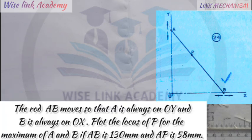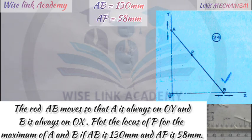As you can see the question in front of you, the rod AB moves so that A is always on OY and B is always on OX. Plot the locus of P for the maximum movement of A and B if AB is 130 and AP is 58. We are given that AB is 130 and AP is 58.